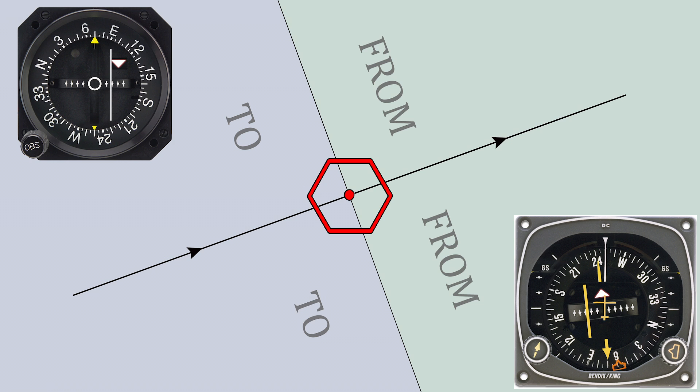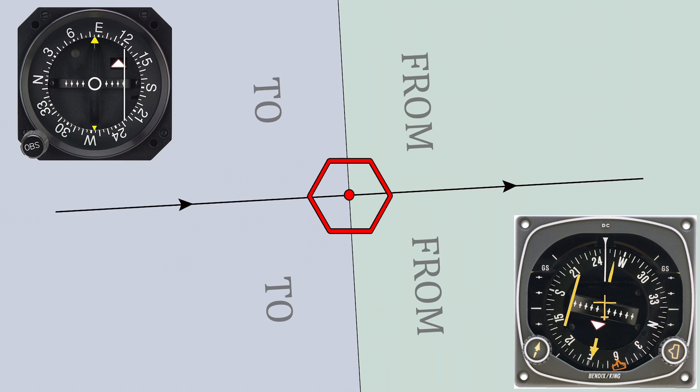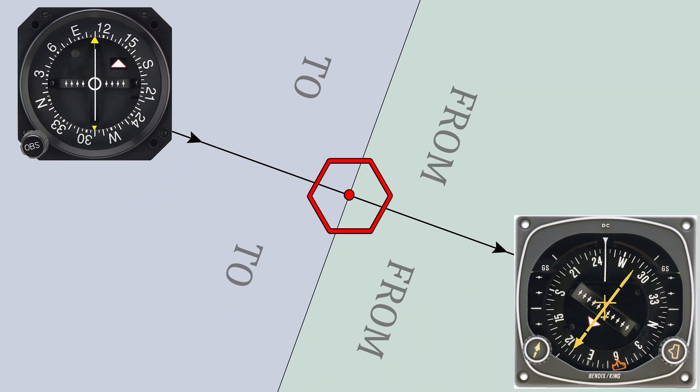So how do you find out where you are? You punch in the VOR frequency and the needle instantly full deflects. What do you do? You start spinning the course selector knob until the needle centers. Once it centers, you can read off the radial you are currently on with the help of the to from indication.